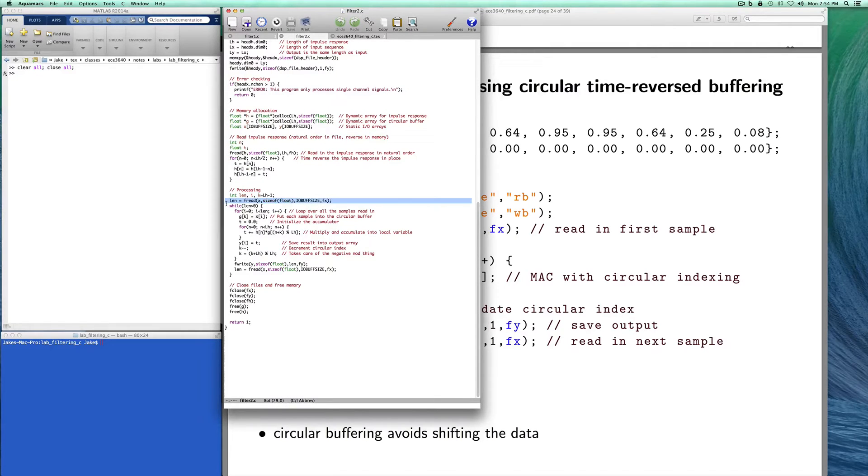This code down here shows us what the for loop looks like. The first thing I do to prime the loop is to read in a block of samples into a buffer. While there are samples that have been read in, I loop over every one of the input samples. For each input sample I will insert the new value into my circular array at position K. T is my accumulator which I initialize to zero. Here's where I do my multiply accumulate loop. Notice that my G array is being indexed in a circular fashion. Once I'm done with the accumulation I will put that value into the output array.